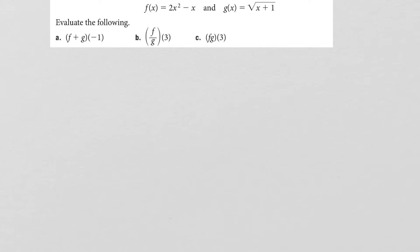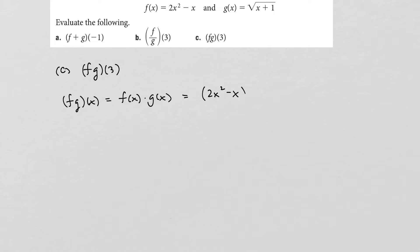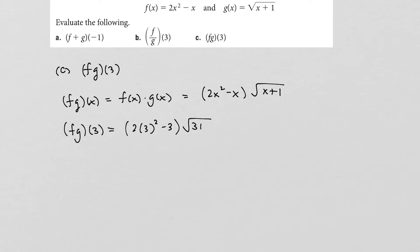Finally, to find (f·g)(3), we first find f·g(x) = f(x)·g(x) = (2x²-x)·√(x+1). There's nothing to simplify, so we leave it in that form. Plugging in 3 gives (2·9 - 3)·√(3+1) = 15·√4 = 15·2 = 30.